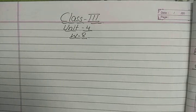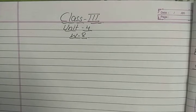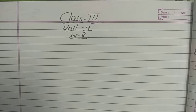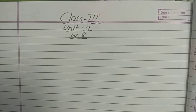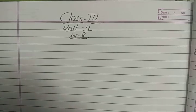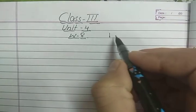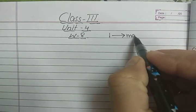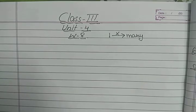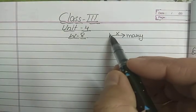Hello students, we are doing the fourth unit, that is multiplication. In the previous video we have done three questions of worksheet number eight, that is world problems based on multiplication. We have discussed in which situation we have to multiply — when one thing is given and you have to find out many of the same kind, then we have to multiply.